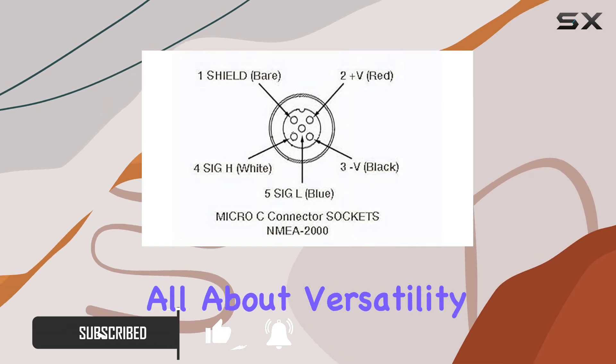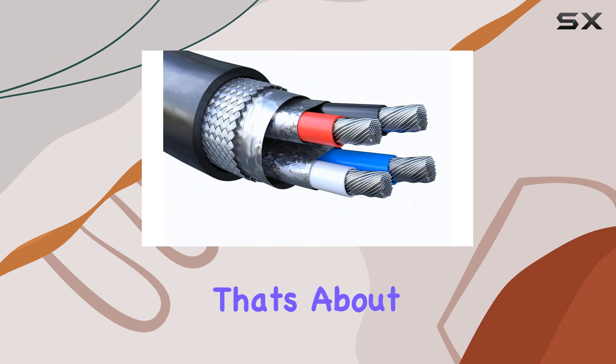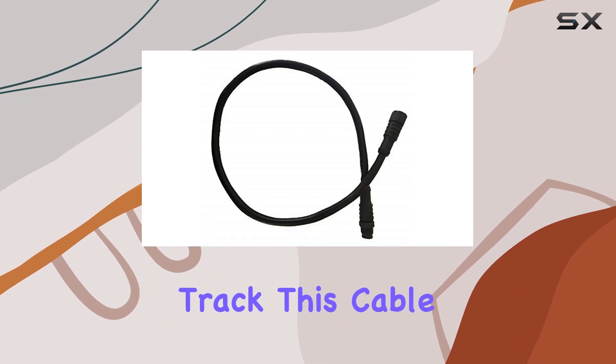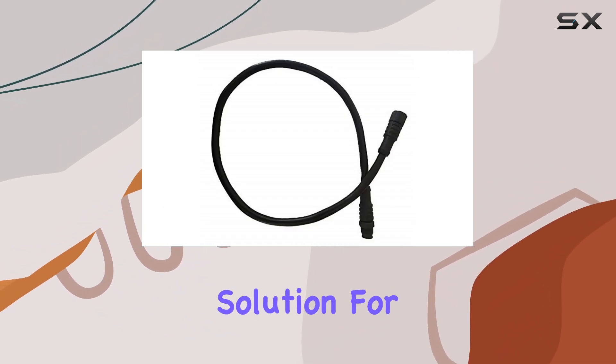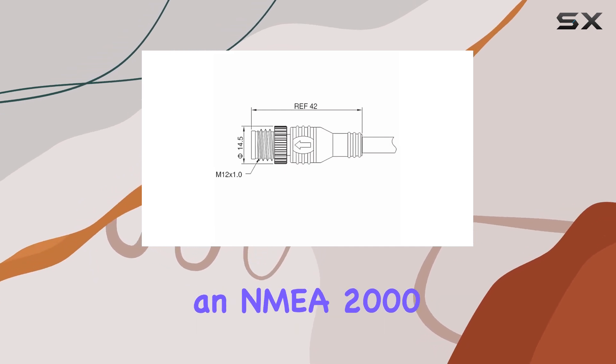First off, it's all about versatility. With a length of 0.25 meters, that's about 10 inches for those keeping track, this cable is your go-to solution for connecting devices or cables with the same gender connector on an NMEA 2000 backbone.